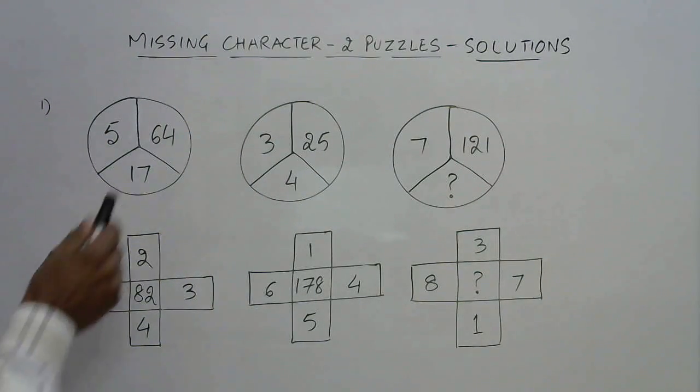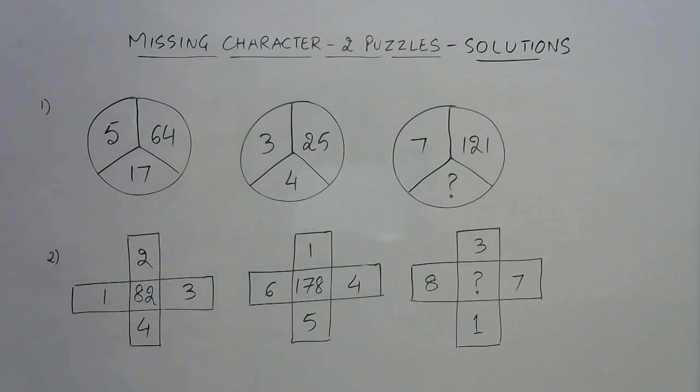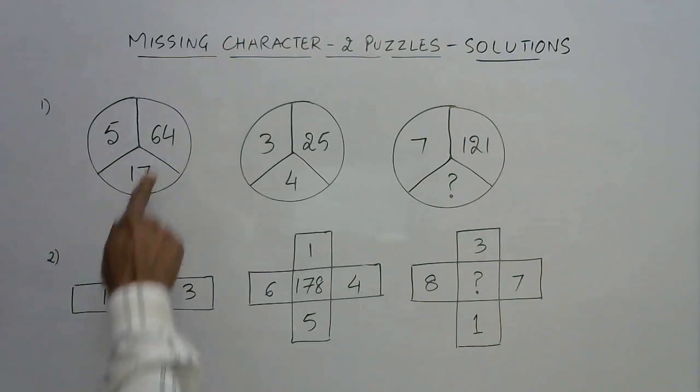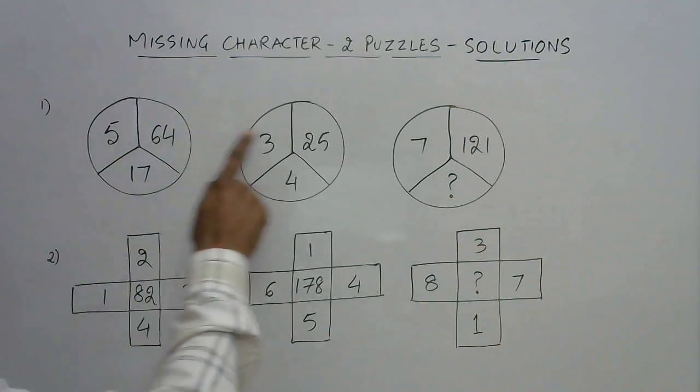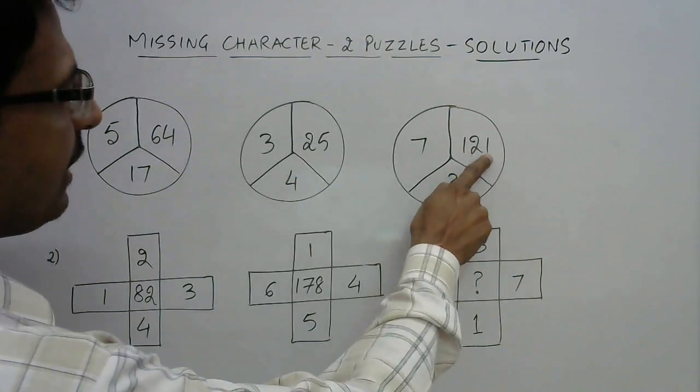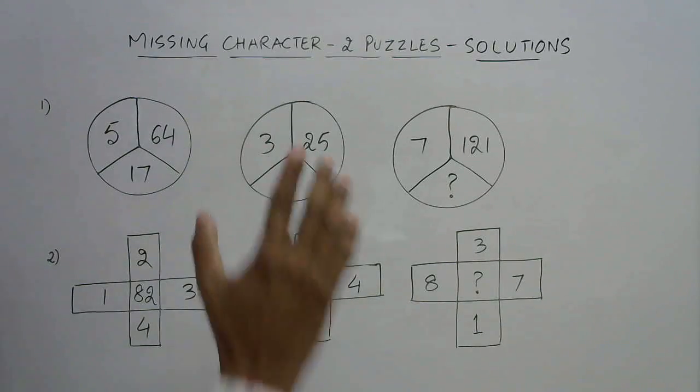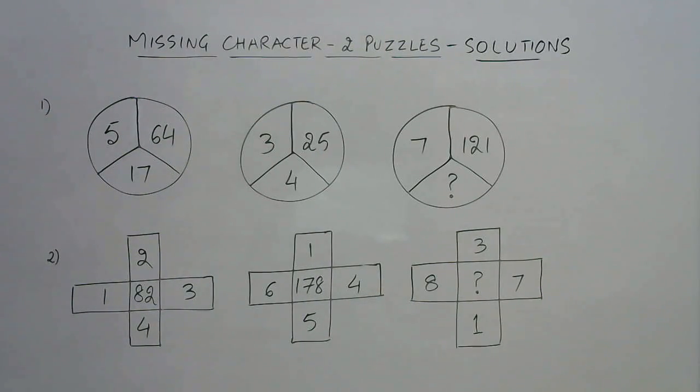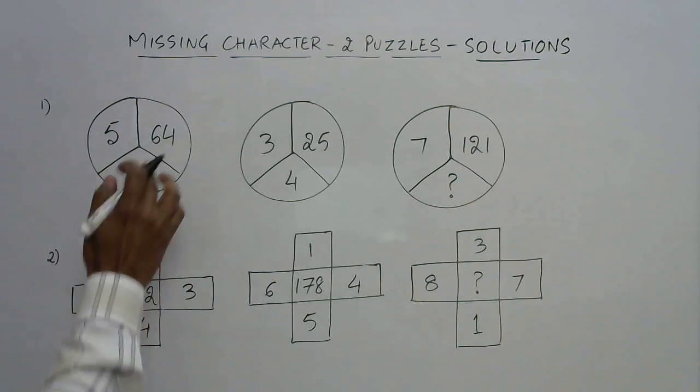The first question was quite a simple one, because you see here this number 64, 25, and 121, they are perfect square numbers. So whenever we have perfect square numbers, there should be a use of square root.